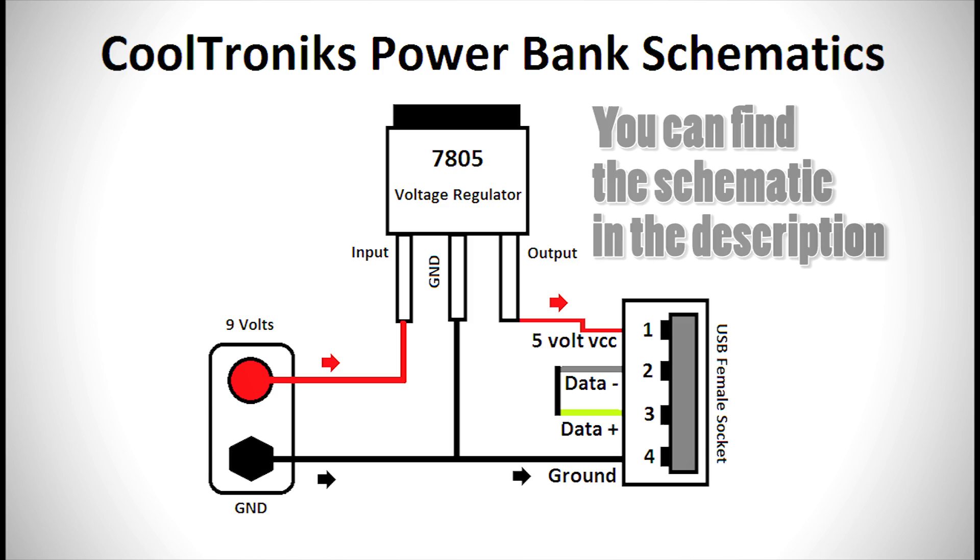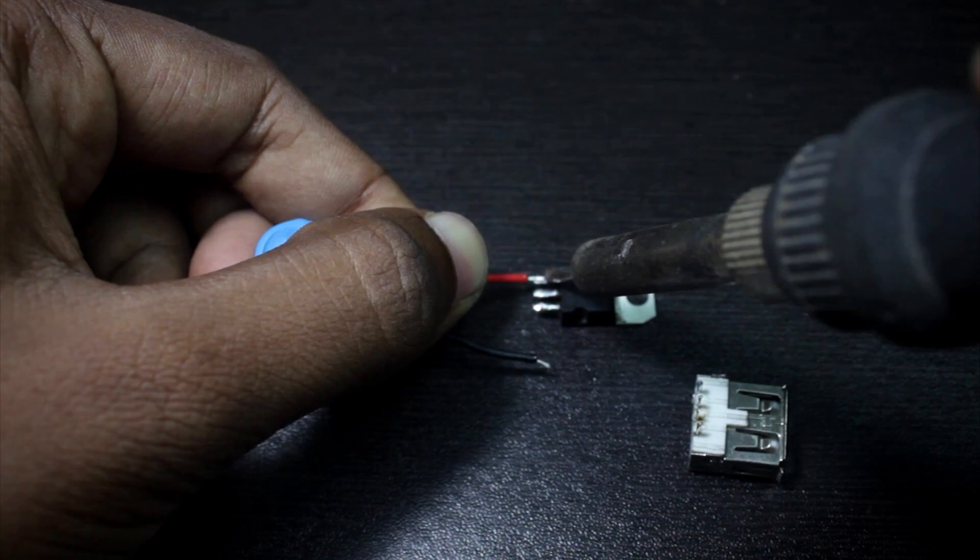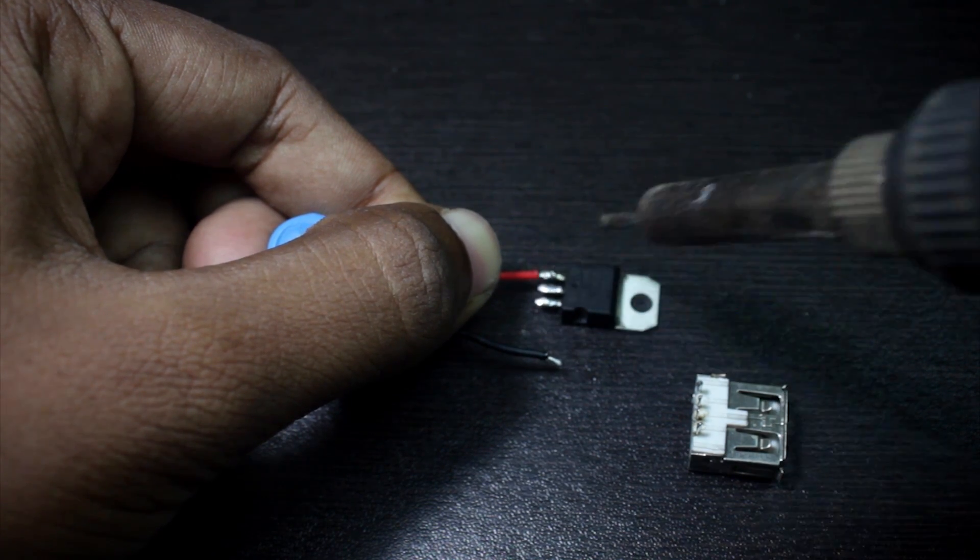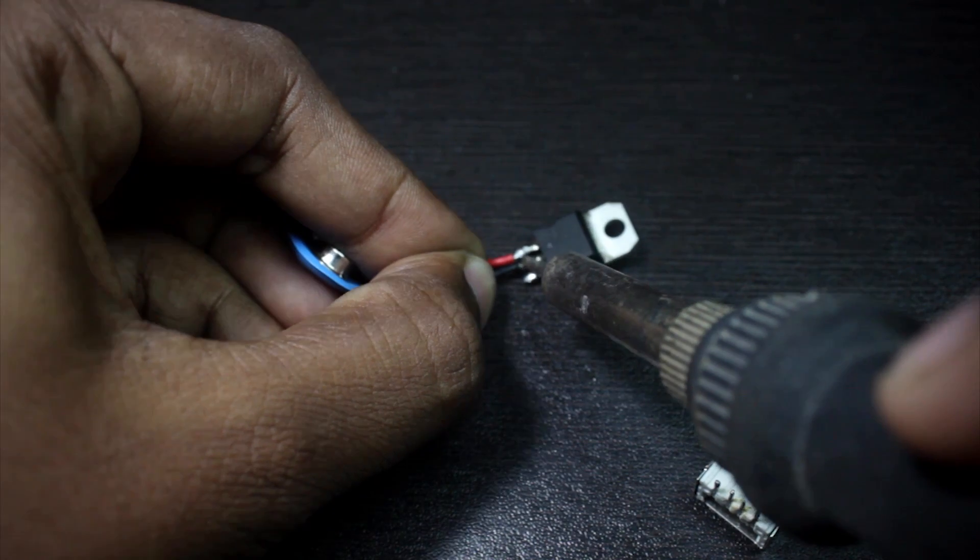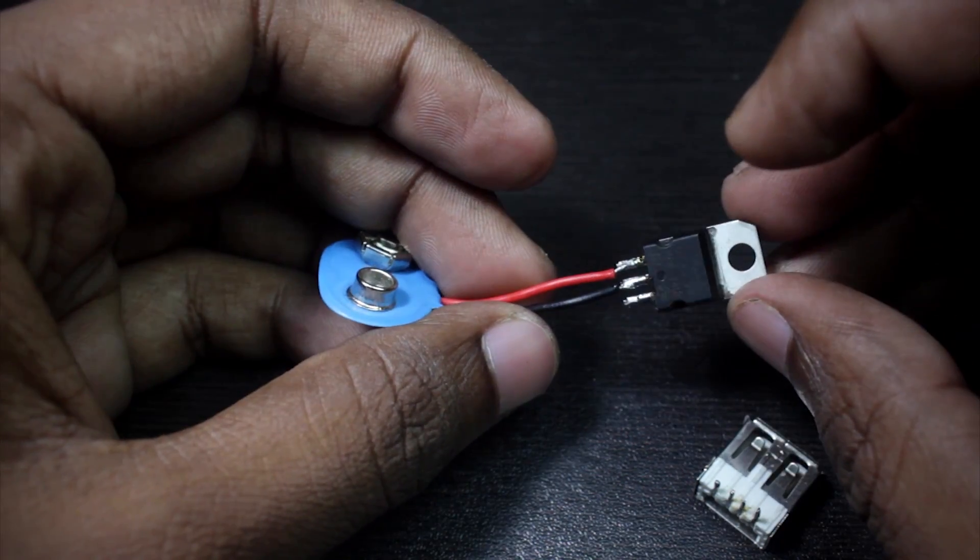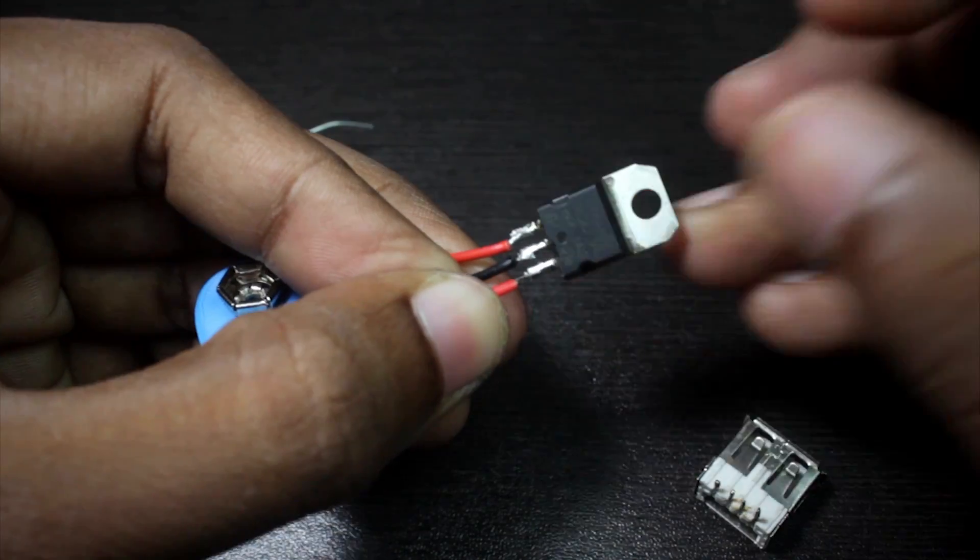First we have to solder the red and black wire of the battery connector to the 7805's input and ground. Red goes to the input pin on the left of the regulator, black goes to the middle which is ground.